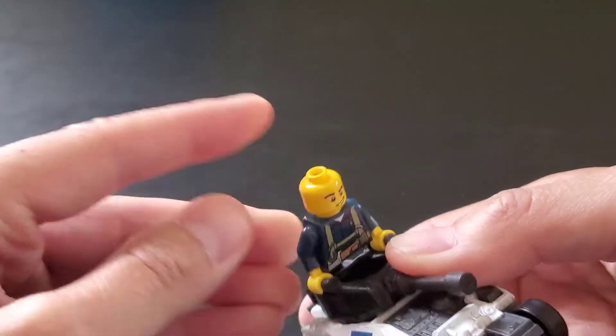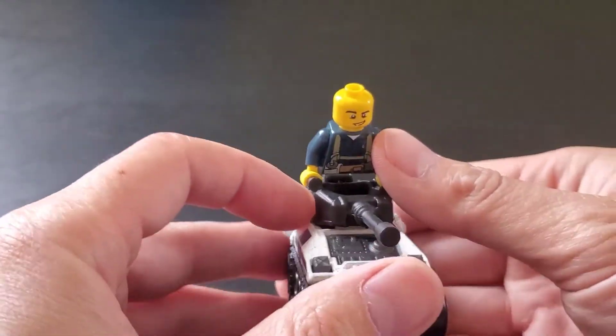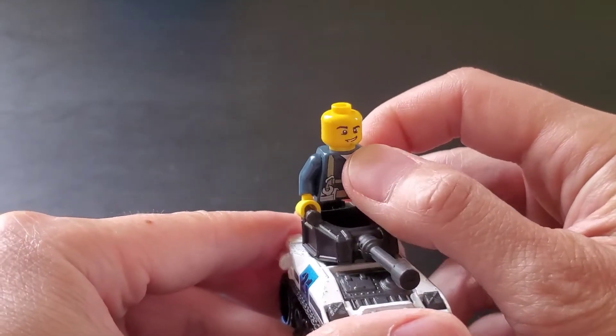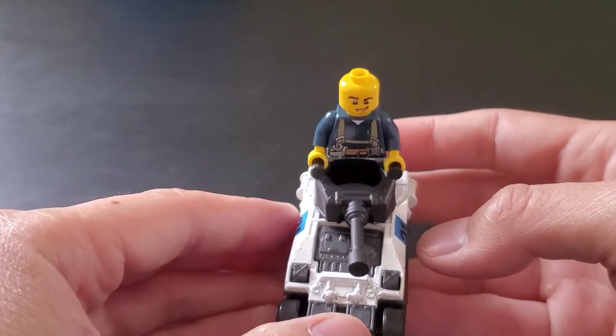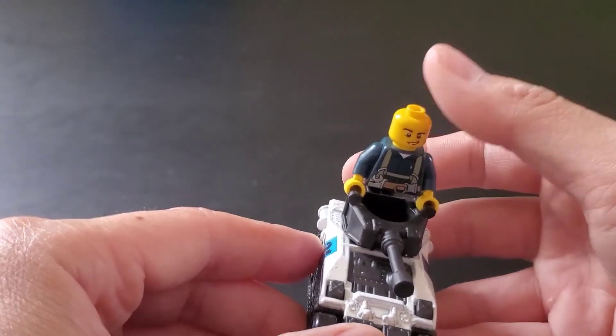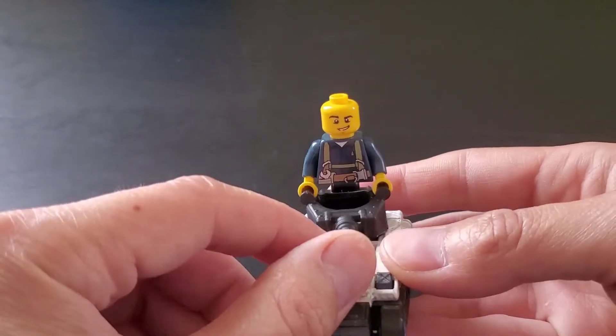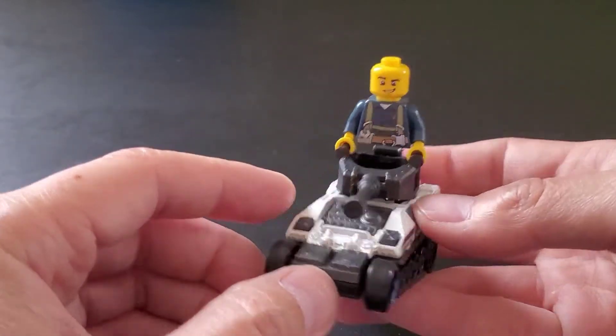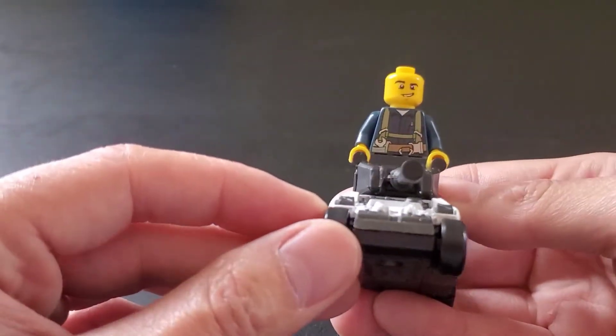His arms are kind of popping off from the handlebars, but I guess you can have, what do you want to say, it's almost like a centaur where it's like half human and half body animal. So this is kind of like a tank with a Lego figure halfway connected.